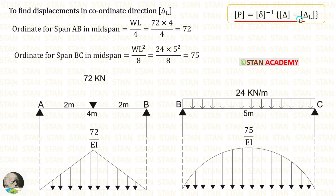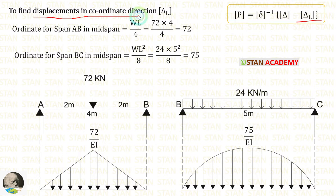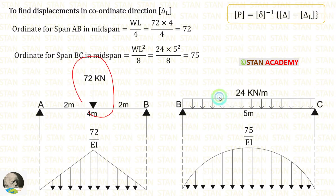First, let us find the delta L matrix. Inside the delta L matrix we will have displacements in the coordinate directions. Since we have released MA and MB, the displacements in this analysis are slopes. We have to find the slope values at the coordinates. Using conjugate beams and the applied loads, we can find the slope values.